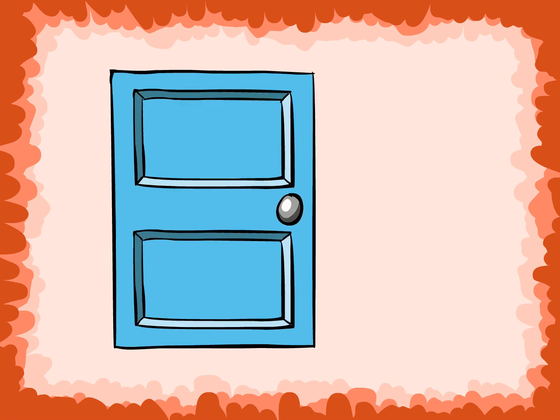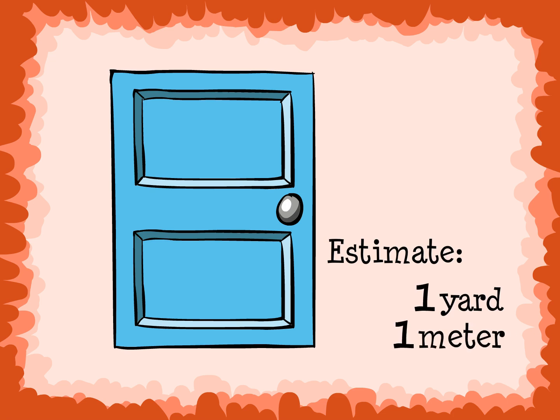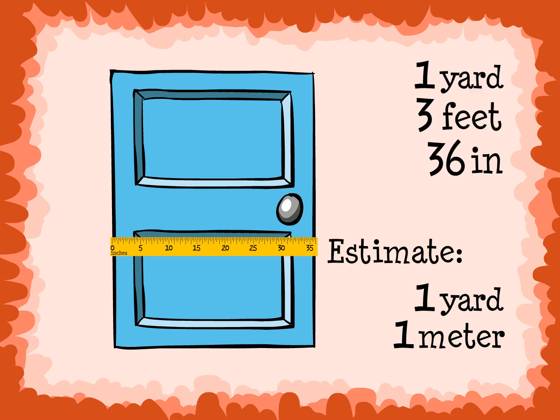We are estimating the width of this door. It is wide, so we should use a meter stick or a yard stick to measure it. I estimate it is 1 yard or 1 meter wide. The actual width is about 1 yard, or 3 feet, or 36 inches. It is also about 1 meter wide. Notice that the edge of the door is lined up with the end of the yard stick and meter stick.